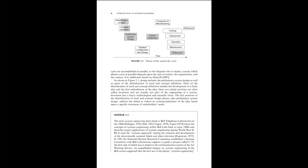One of many possible representations of the life cycle of a system is shown in Figure 1.1, beginning with the identification of the need for the system and progressing through the retirement of the system. Some of the phases of the life cycle are accomplished in parallel. Design includes the preliminary system design as well as parts of the identification of need and concept definition. Parts of the identification of need and concept definition include the development of a basic idea and the first embodiment of the idea. These two initial activities are often called invention and are usually not part of the engineering of a system. Invention has a heavy technological and scientific focus.